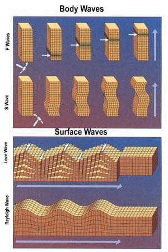Love waves are horizontally polarised shear waves, existing only in the presence of a semi-infinite medium overlain by an upper layer of finite thickness. They are named after A.E.H. Love, a British mathematician who created a mathematical model of the waves in 1911. They usually travel slightly faster than Rayleigh waves, about 90% of the S wave velocity, and have the largest amplitude.